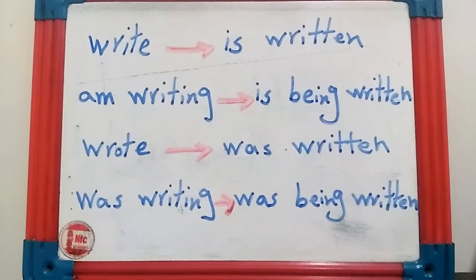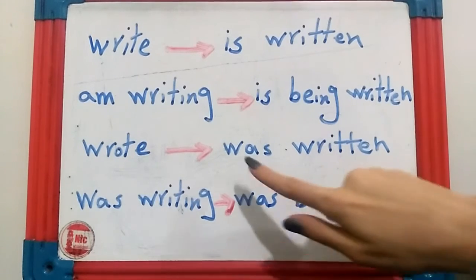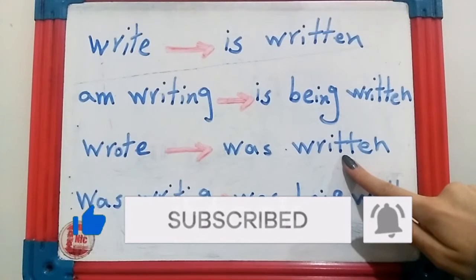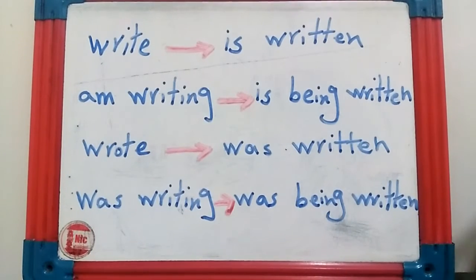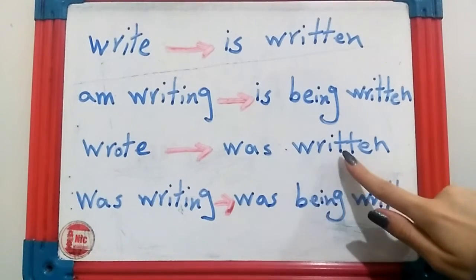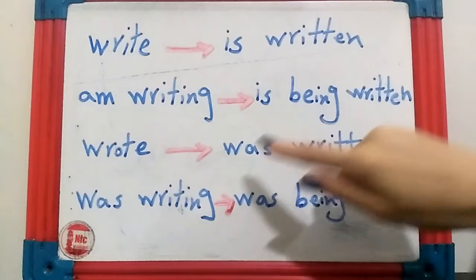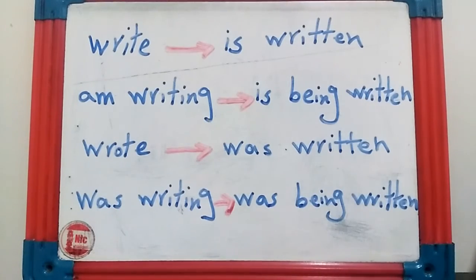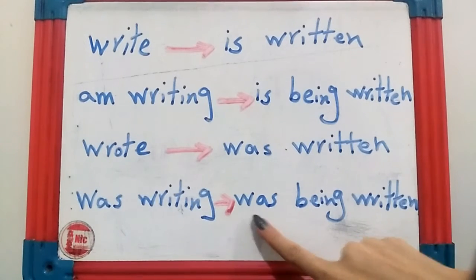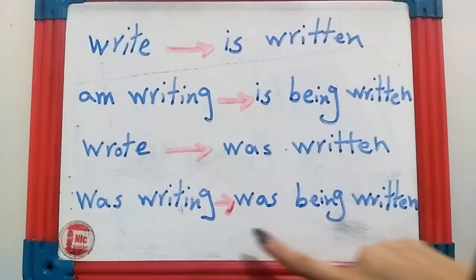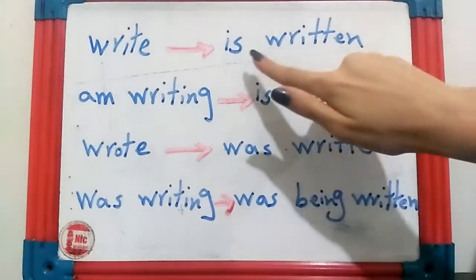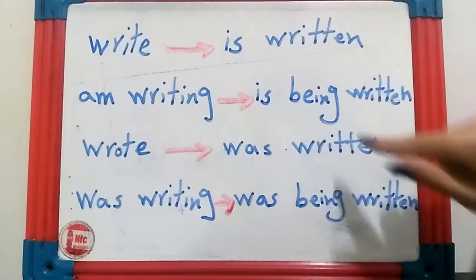'Wrote' is past simple. If we want to change past simple to passive form, we write: was + past participle of the verb. If the subject is plural, it becomes 'were' + past participle. For past continuous — 'was writing' — the structure is: was being written. All of these auxiliary parts stay fixed; the main verb always converts to its past participle.